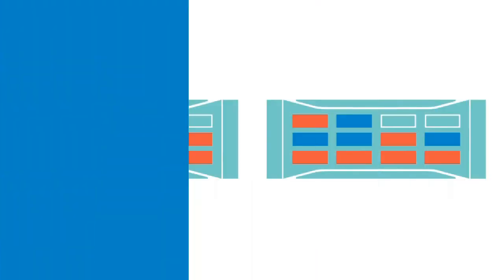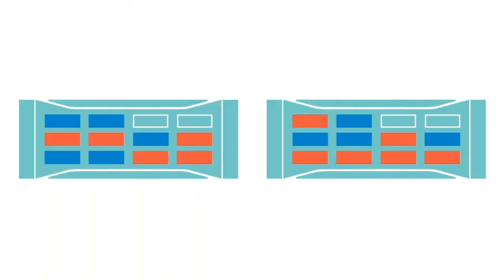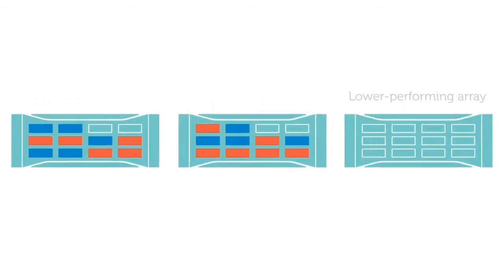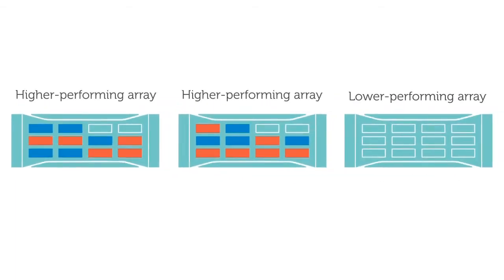In this case, when we add a new array to the environment, we'll add a lower-performing array, because we know we don't need any additional performance. First, the capacity load balancer will notice that the newest array is empty, and will add some capacity to it.